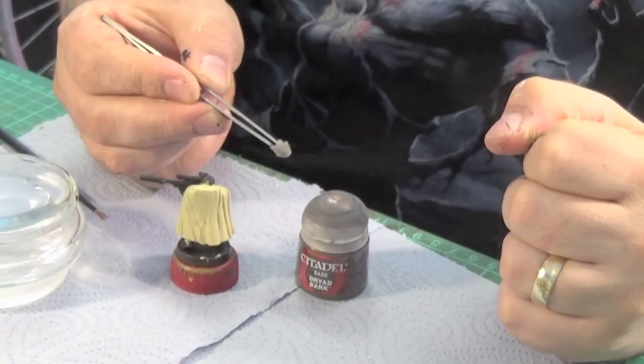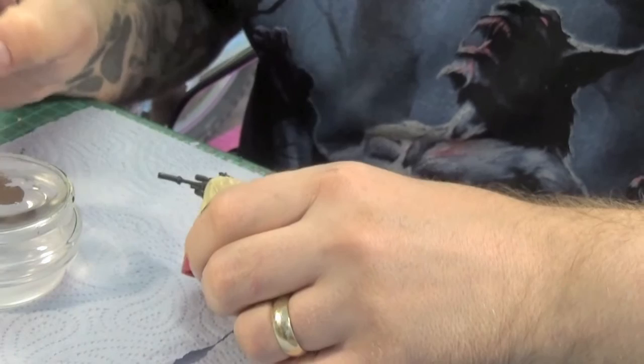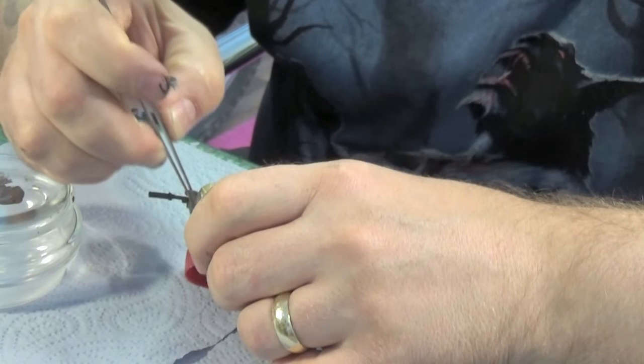Which I did two coats. Now I'm just going to use my little sponge and a bit of Dryad Bark, and I'm going to just gently dab, trying not to go too heavy.